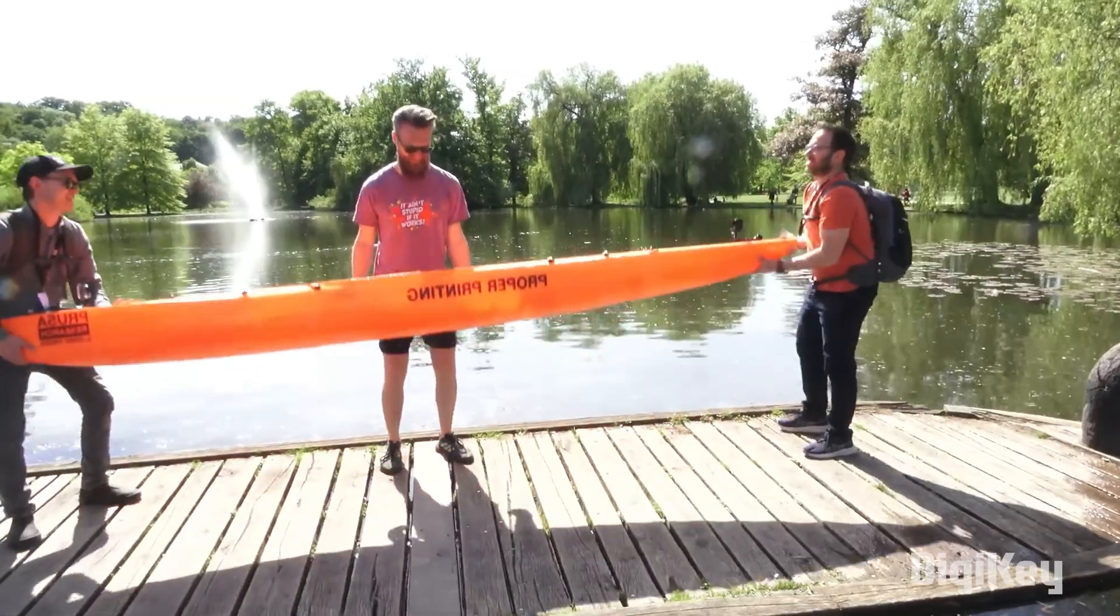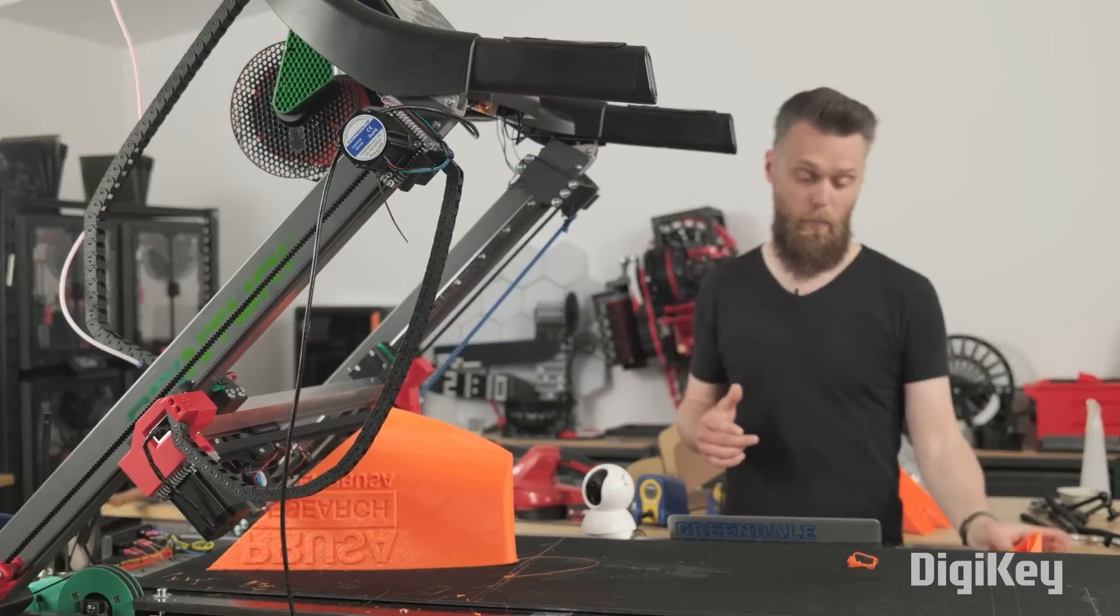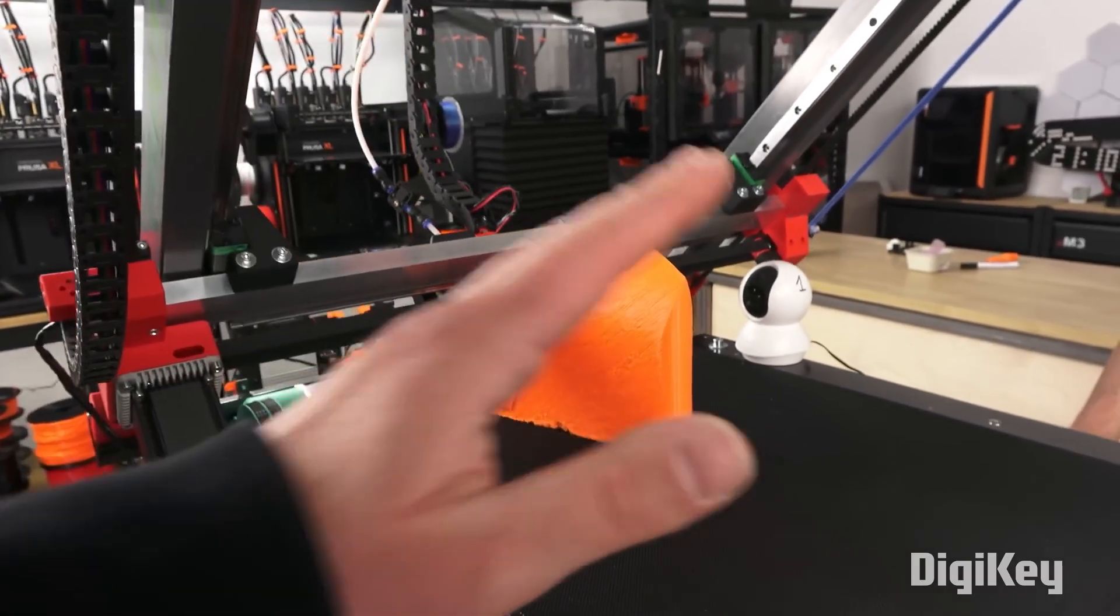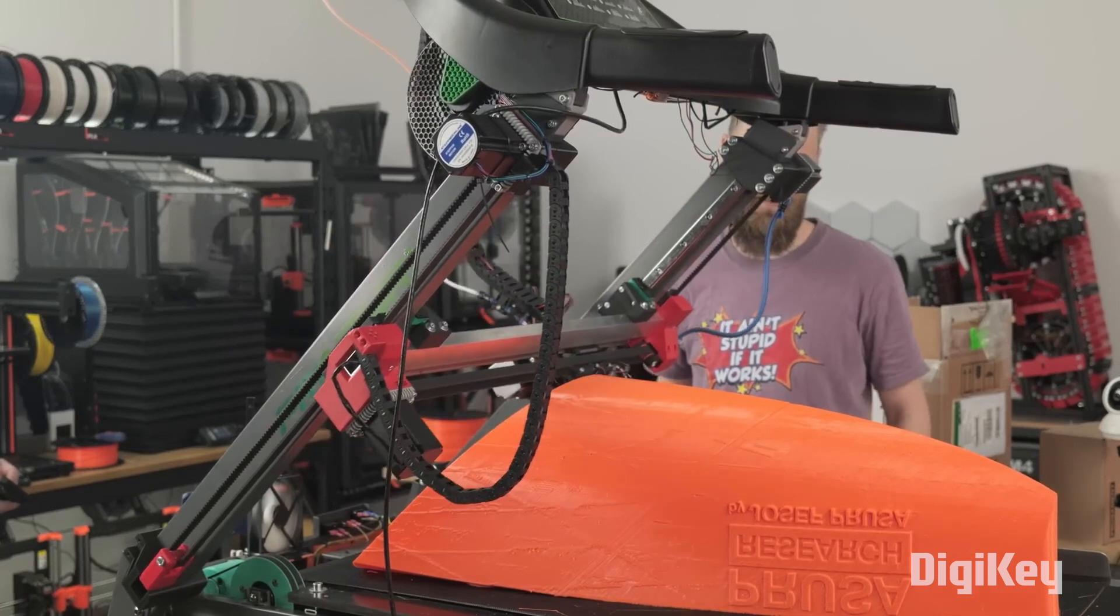To pull this off, they've created a massive belt printer based off of a treadmill. That way they'd not only have the width necessary for the kayak, but also the length. But even still, it's a massive print, and the deadline is rapidly approaching.